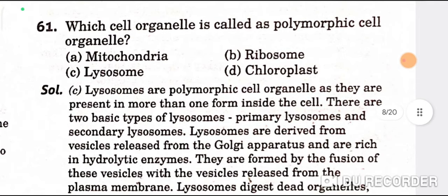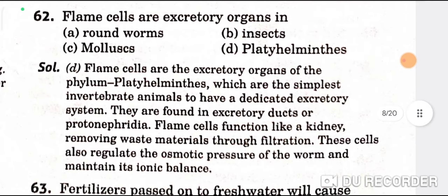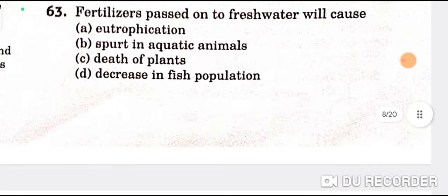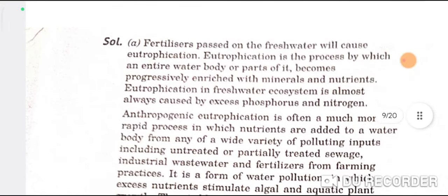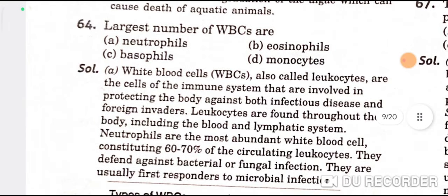Moving to the biology section. Question 1: Which cell organelle is called the polymorphic cell organelle? Lysosome — C is the correct option. Question 2: Flame cells are excretory organs in Platyhelminthes — D is the correct option. Fertilizers passed into fresh water cause eutrophication. The largest number of WBCs are neutrophils — A is the correct option.